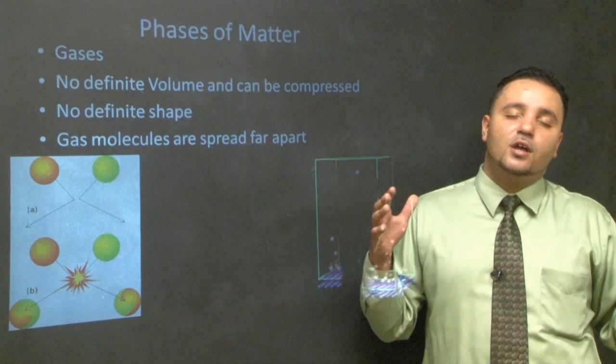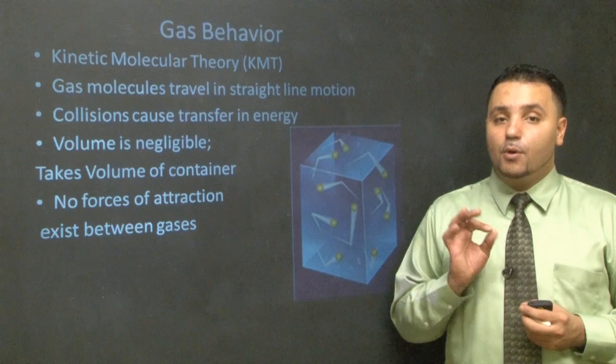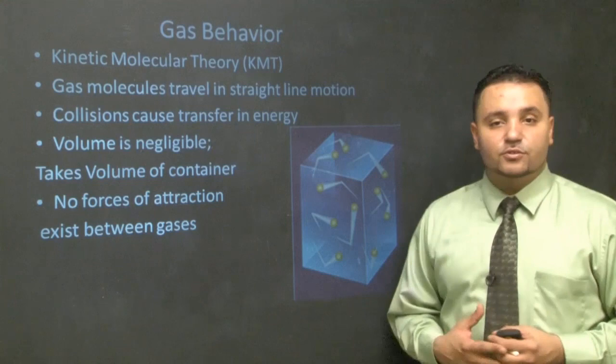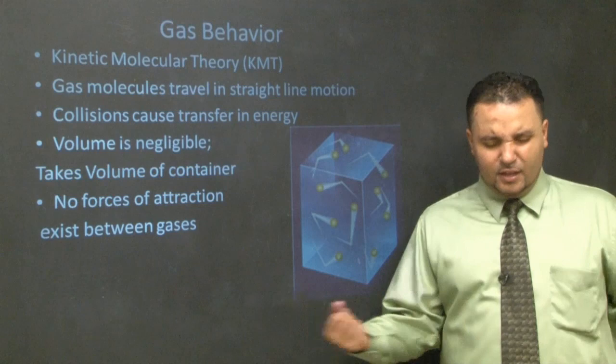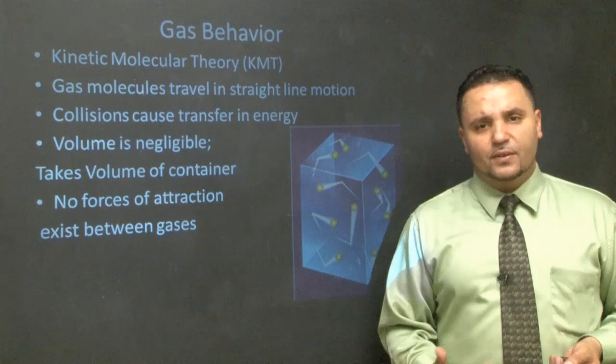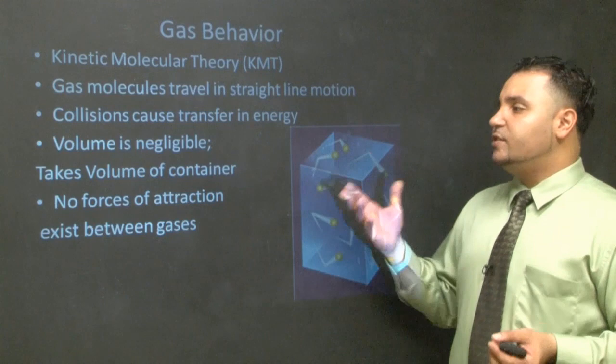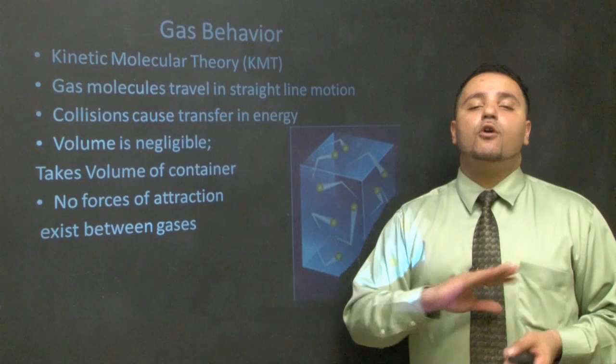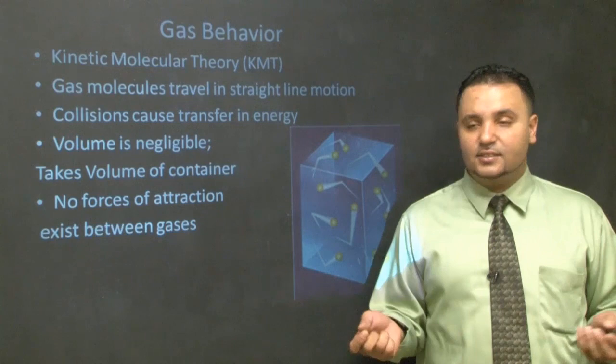Kinetic Molecular Theory, or KMT, describes how gas molecules travel. First, they travel in a straight line. Second, they collide into one another, transferring energy — the first transfers energy to the second or they share it equally. Bonds may also form: when bonds form, energy is absorbed; when bonds break, energy is released. Gas molecules take the volume of their container and have no forces of attraction, so they're nonpolar and bounce all over the place.